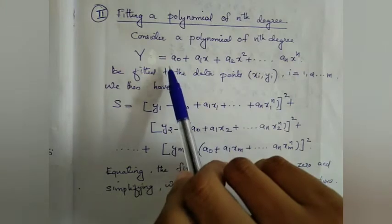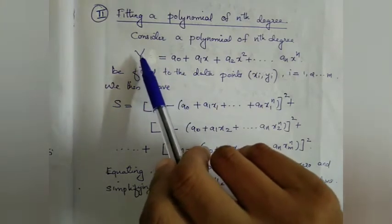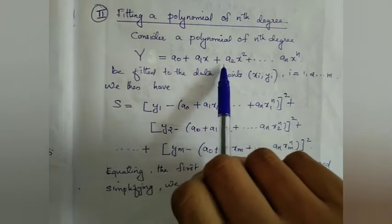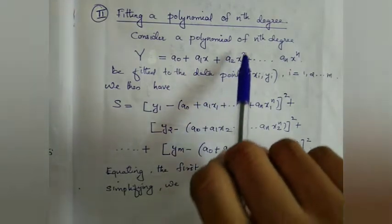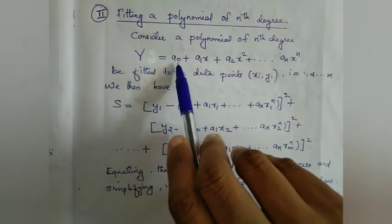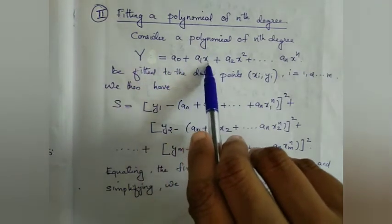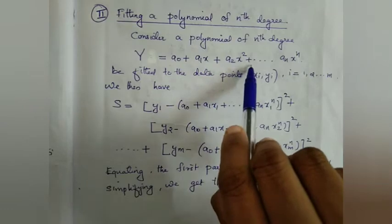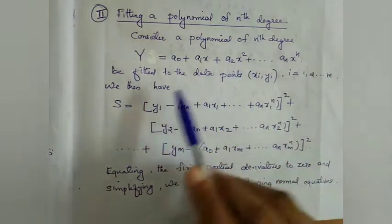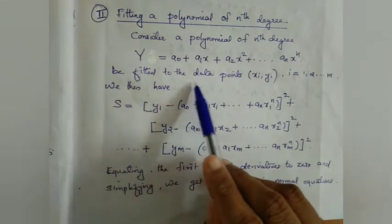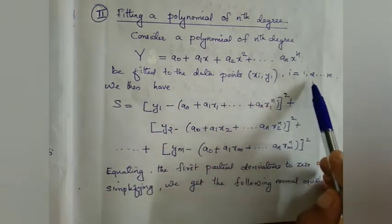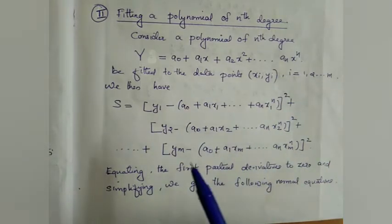If the order of the polynomial is 2, we can write it as y equals a0 plus a1x plus a2x squared. If it is a third degree polynomial, we write it as y equals a0 plus a1x plus a2x squared plus a3x cubed. This polynomial is to be fitted to the data points (xi, yi) where i equals 1, 2, up to m.